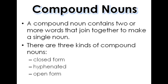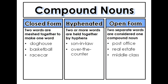Compound nouns contain two or more words that join together to make a single noun, and there are three different kinds. Closed form: two words meshed together to make one word, like basketball. Hyphenated: two or more words held together by hyphens, like son-in-law.